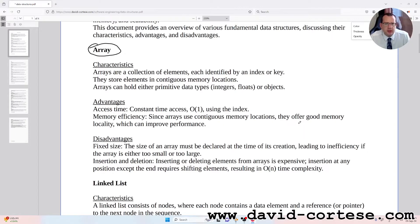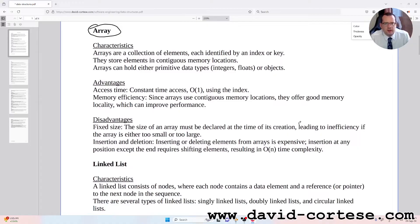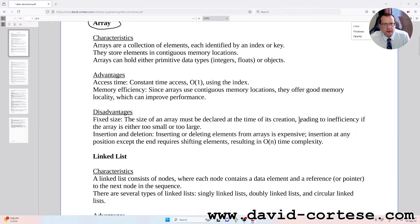Arrays can hold either primitive data types like integers and floats, or objects. Advantages: access time is constant time O(1) using the index.